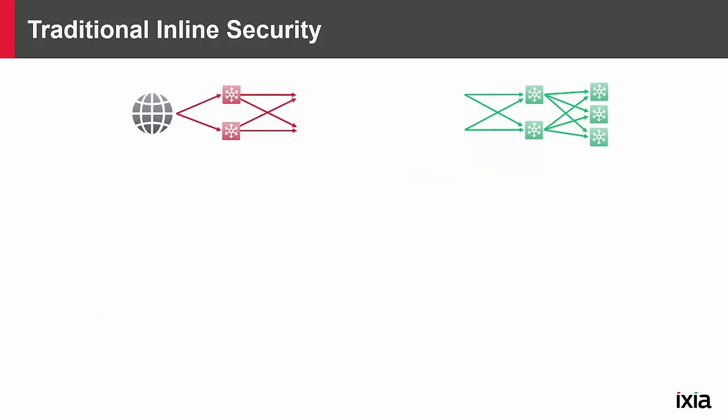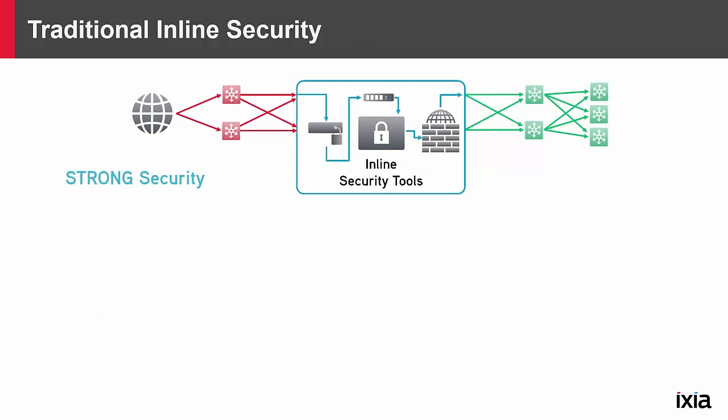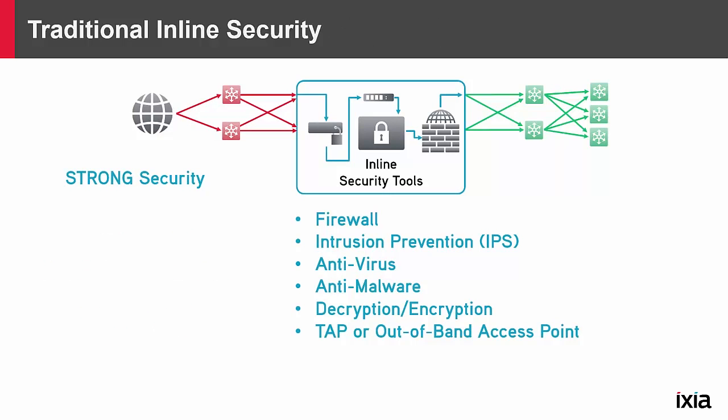So many customers have moved to a traditional inline security architecture, which has a series of inline tools all strung together, providing very strong security all in one group. These are often made up of firewalls, intrusion prevention devices, anti-malware or anti-virus, decryption or encryption, and then often many customers are adding out-of-band access points, such as taps for out-of-band monitoring for an IDS device or other type of performance device as well.